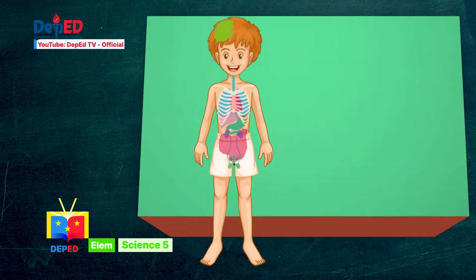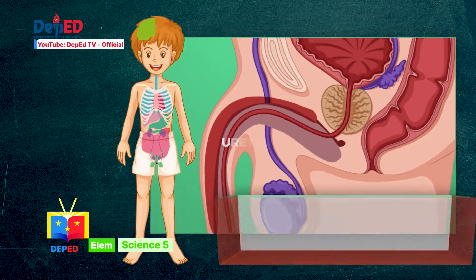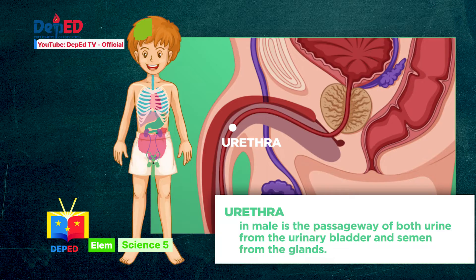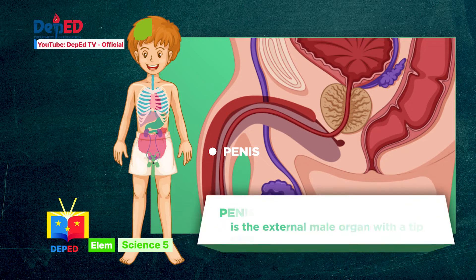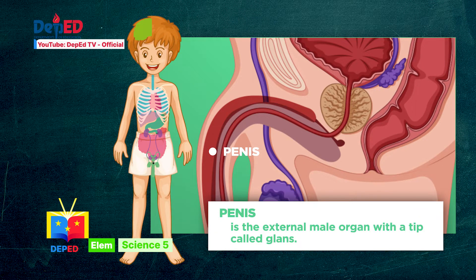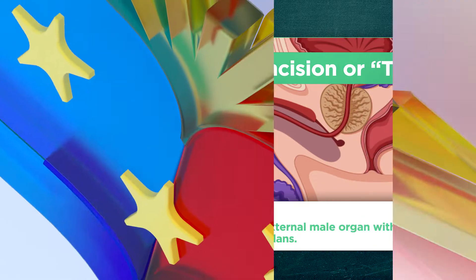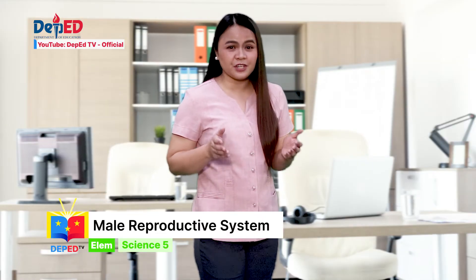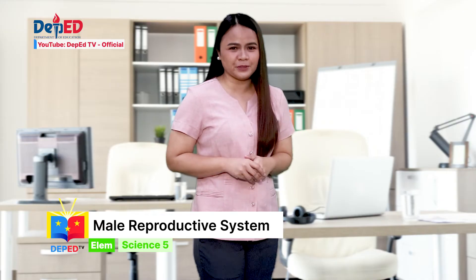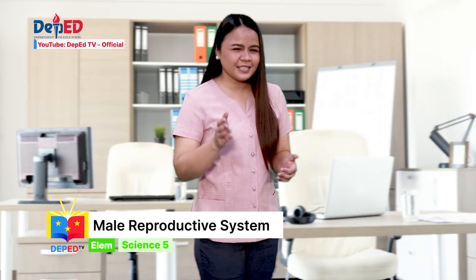Number 7: Urethra. In males, the urethra is a passageway of both urine from the urinary bladder and semen from the glands. Number 8: Penis. The penis is the external male organ with a tip called the glans. It is covered with a foreskin that may be removed through circumcision or tuli. The organs of the male reproductive system are specialized in producing and secreting male sex hormones, which is essential to continue life.